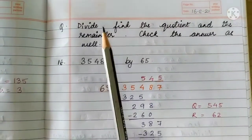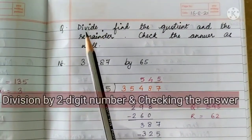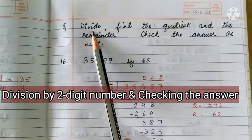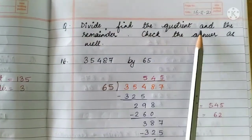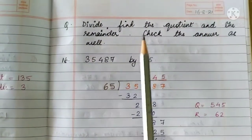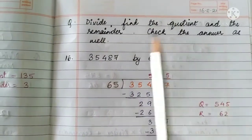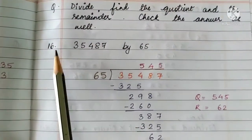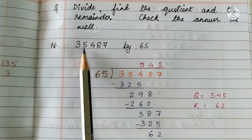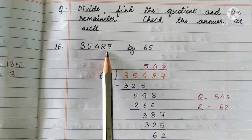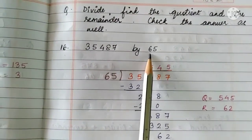Dear students, we are continuing exercise 6.4 and our next question is divide, find the quotient and the remainder. Check the answer as well. Children, this is question number 16: 35,487 divided by 65.